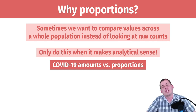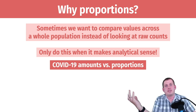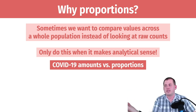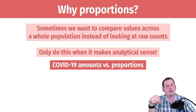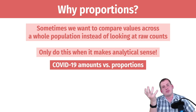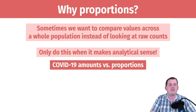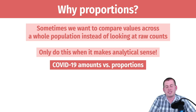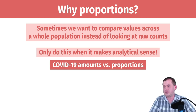Now our per capita numbers aren't great. They were in the initial days, but the virus still spreads regardless. When you scale stuff down with per capita numbers, you're going to hide the underlying infections, which is a problem.